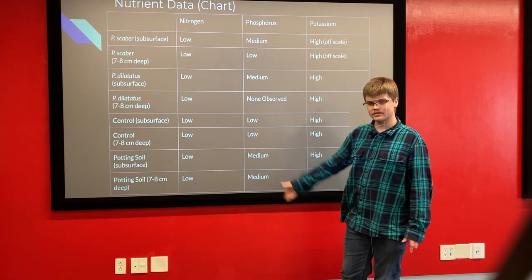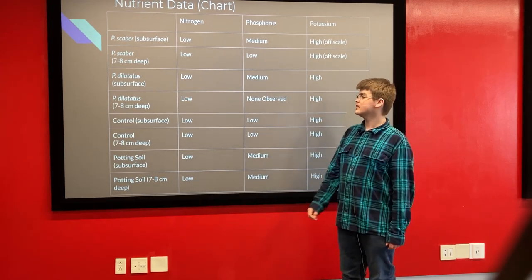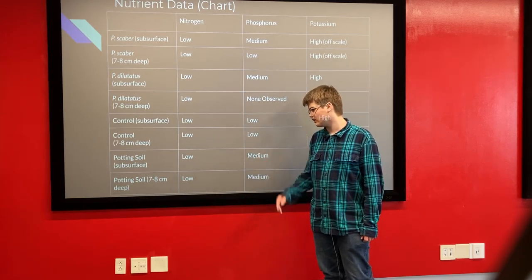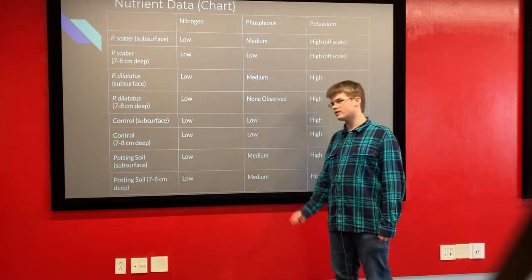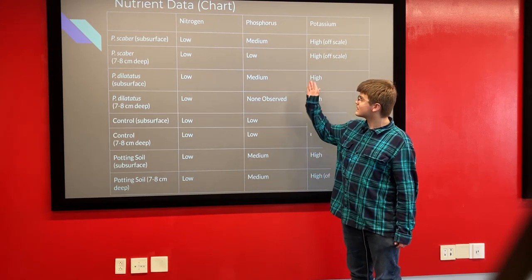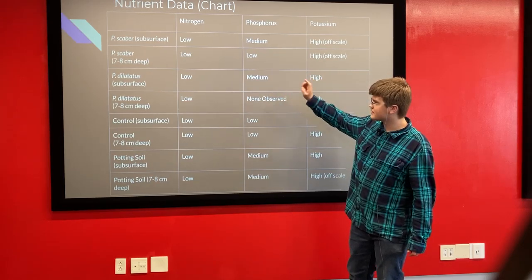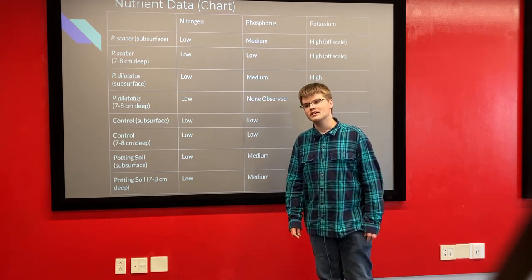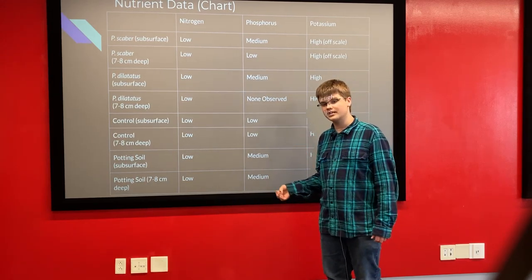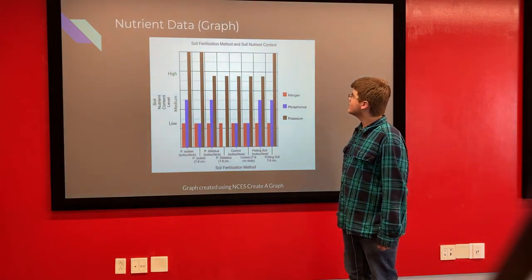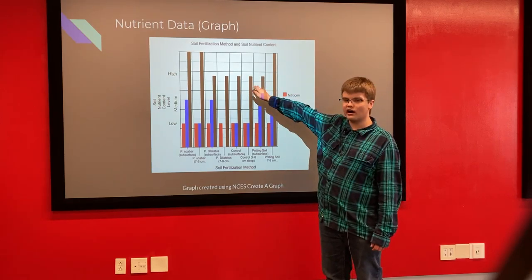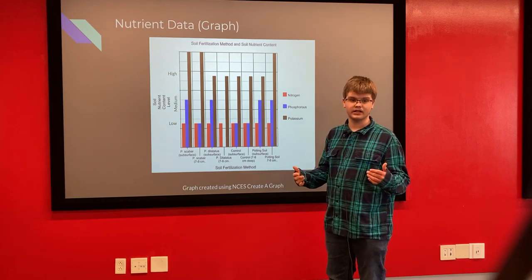Moving on to the nutrient data: everything was low for nitrogen. I took this measurement after running both rounds of plant tests, so this is very likely because the plants used up most of the nitrogen. Interestingly, this shows that potting soil does not hold its nutrients for very long, given that nitrogen was already low after just two rounds of very small plants. Potassium was high in all tubs, but higher in Porcelio scaber and potting soil. Phosphorus was low overall, but there was a medium reading at subsurface depths in Porcelio dilatatus, Porcelio scaber, and both potting soil tubs, suggesting some addition of phosphorus from the isopods eating the detritus they were given. A graph shows these results, including potassium spikes that were actually off the scale of the test kit.